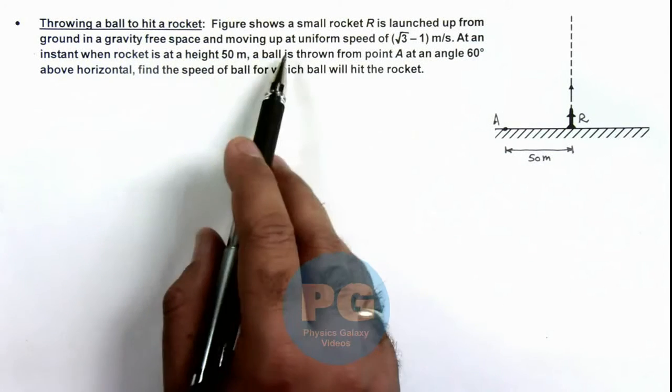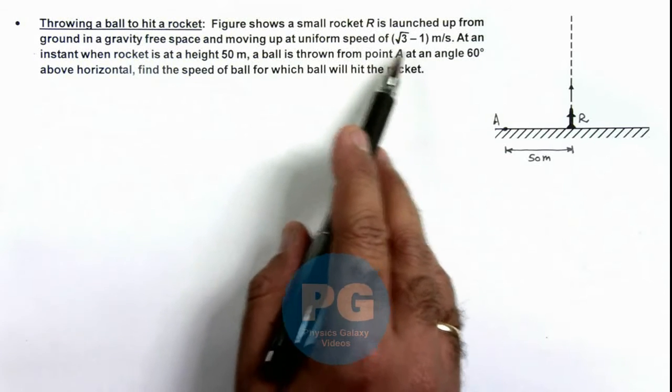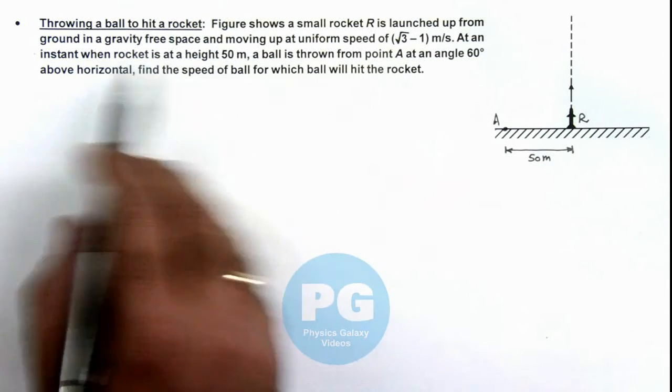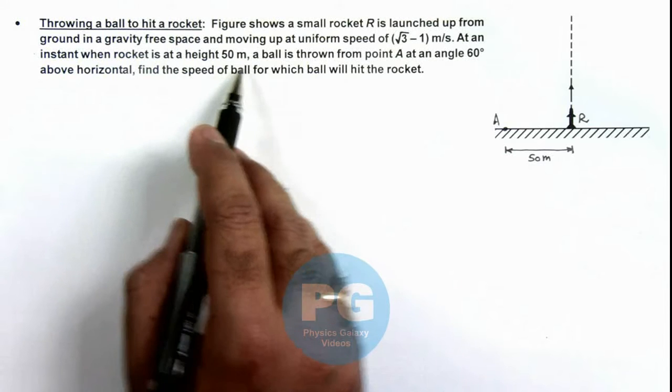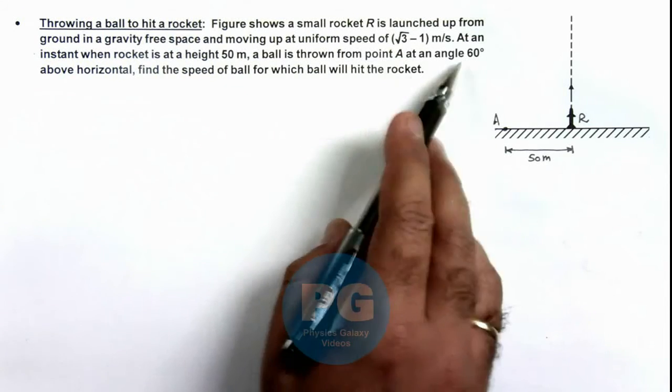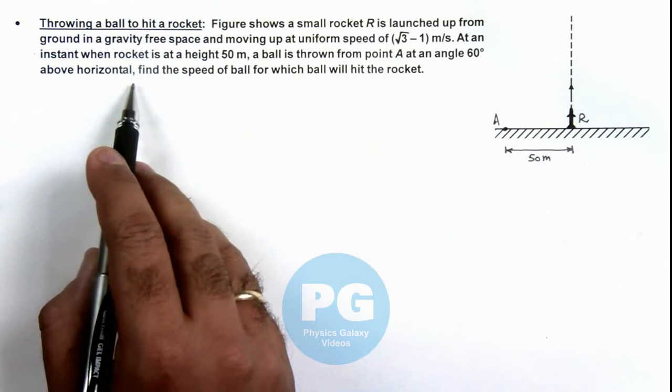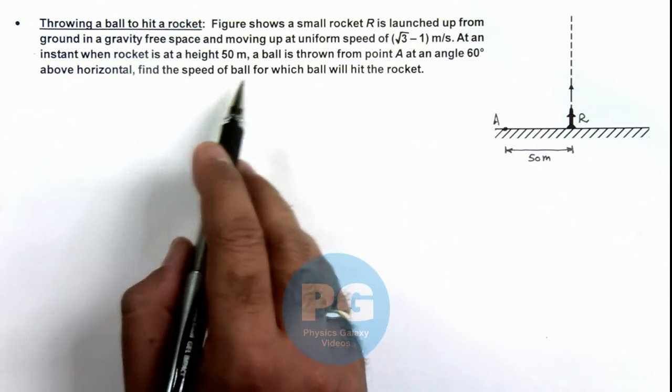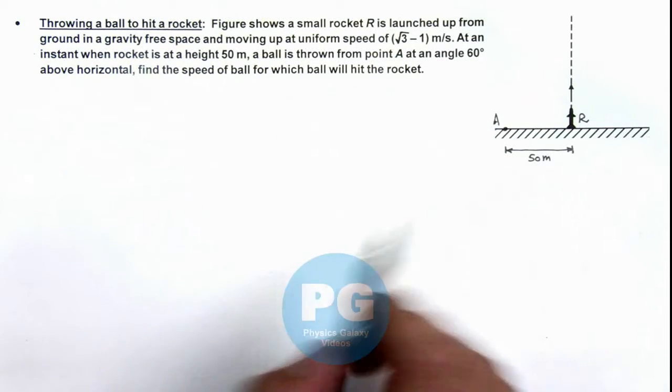The rocket is moving up at a uniform speed of √3 - 1 meters per second. At an instant when the rocket is at a height 50 meters, a ball is thrown from point A at an angle 60 degrees above horizontal. We are required to find the speed of ball for which the ball will hit the rocket.